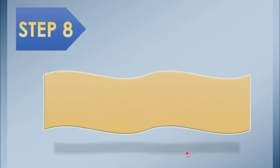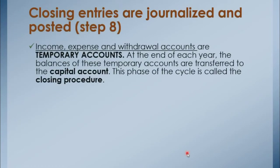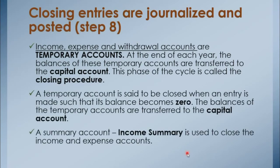For our last topic, we are going to learn how to close the books. Why is there a need to close the books? We need to have closing entries to reset the temporary account balances to zero on the general ledger. Income, expense, and withdrawal accounts are temporary accounts. At the end of each year, the balances of these temporary accounts are transferred to the capital account. This phase of the cycle is called the closing procedure.